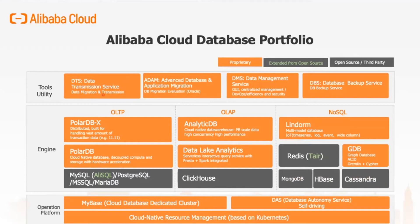Under the Tools and Utilities section, we have DTS, Data Transmission Service, for any-to-any replication or migration. ADAM, Advanced Database and Application Migration, to migrate out of Oracle Database. DMS, a centralized database management tool you can use to manage databases across Alibaba Cloud, your on-premise services, or even other cloud vendors. And DBS, Database Backup Service — a centralized backup service to manage all your backups, be it on Alibaba Cloud, other clouds, or even your on-premise services.